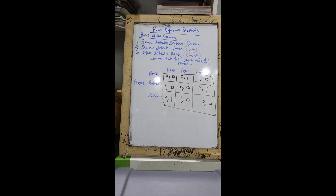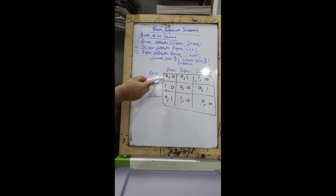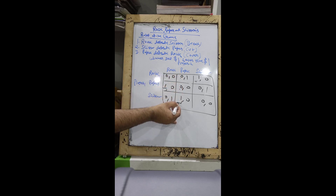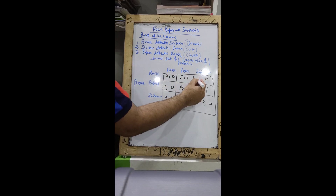The third game is the very famous one: rock, paper, and scissor. Rock defeats scissor because it can break it; scissor defeats paper because it can cut it; and paper defeats rock because it can cover it. There are two players. The winner gets one dollar and the loser gives one dollar away. Player one thinks player two will play rock — player one should go for paper. Player one thinks player two will play paper — player one goes for scissor. Player one thinks player two will play scissor — player one goes for rock.